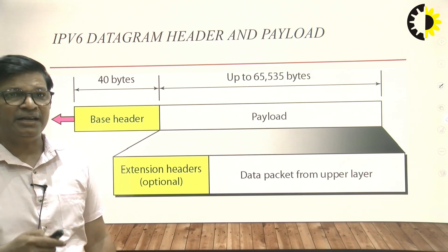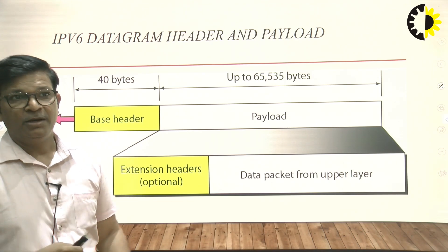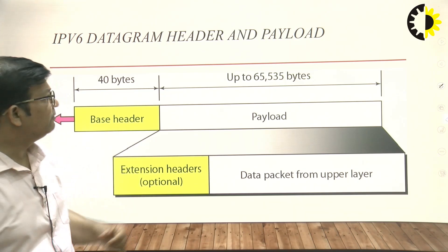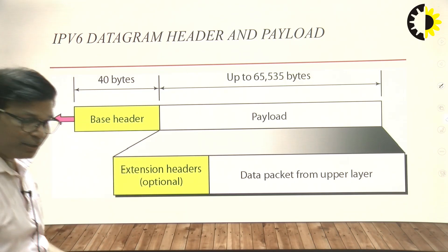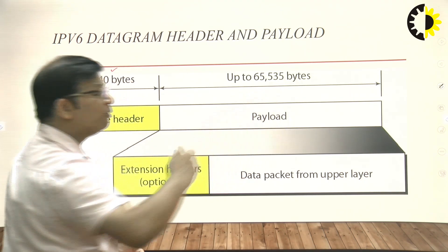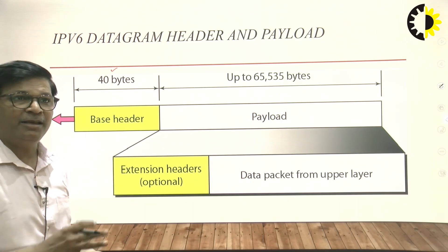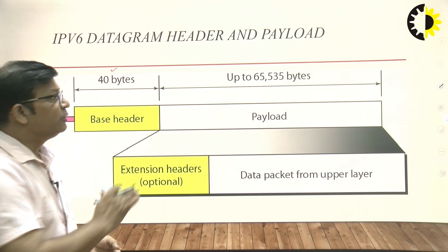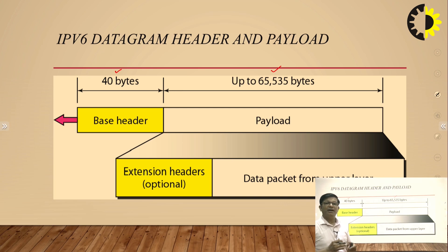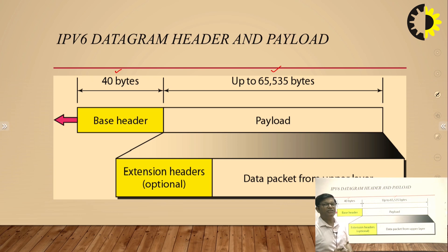This is the IPv6 datagram header and payload. The base header is 40 bytes, and the payload — meaning how much data it can carry along with its header — is 65,535 bytes. If we are extending the protocol, the benefit of the payload is the extension header.